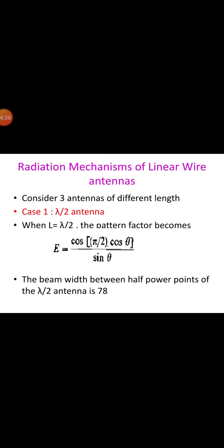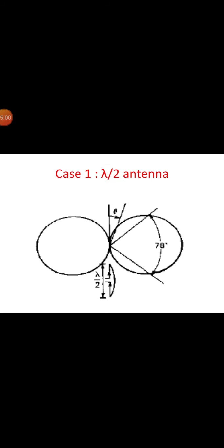Let us consider the case where the length l is equal to lambda/2. The pattern factor becomes C = cos(π/2 * cosθ) / sinθ. This is only slightly more directional than the pattern of the infinitesimal dipole, which is given by sinθ. The beamwidth between half-power points of the lambda/2 antenna is 78°, as compared to 90° for the short dipole.